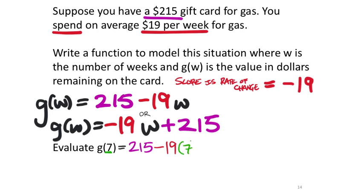Order of operations kind of stuff, you're welcome to just put that in the calculator though. But 19 times 7, I get 133 there. So the last thing here, just do that subtraction. So 215 minus 133, 82.